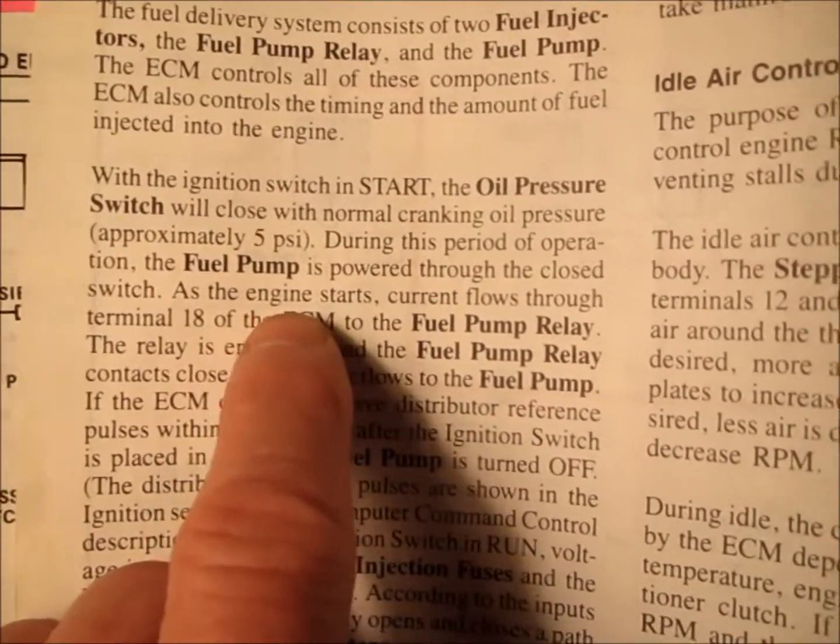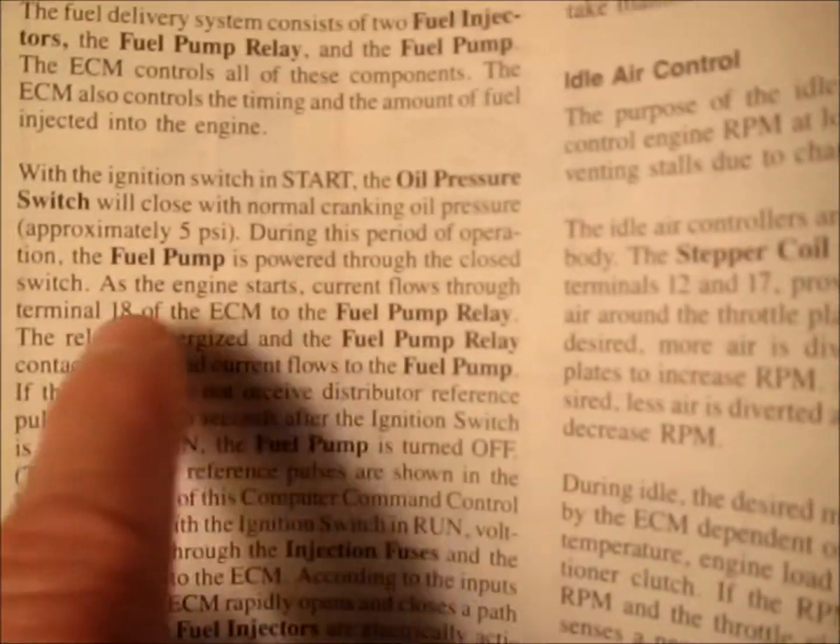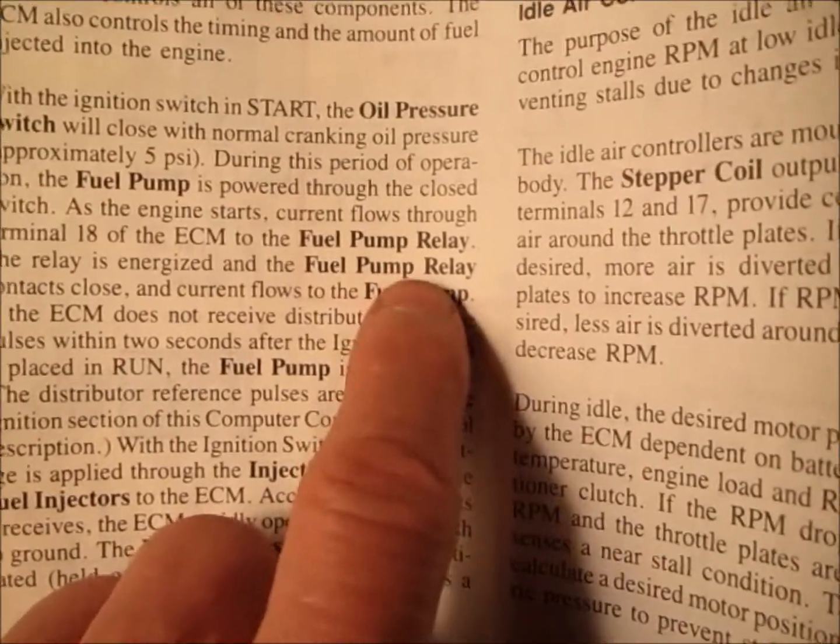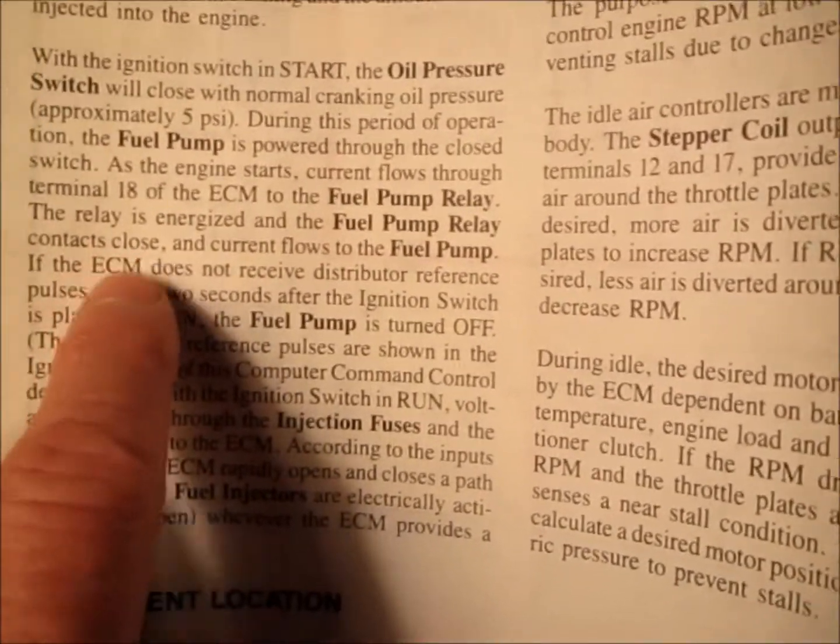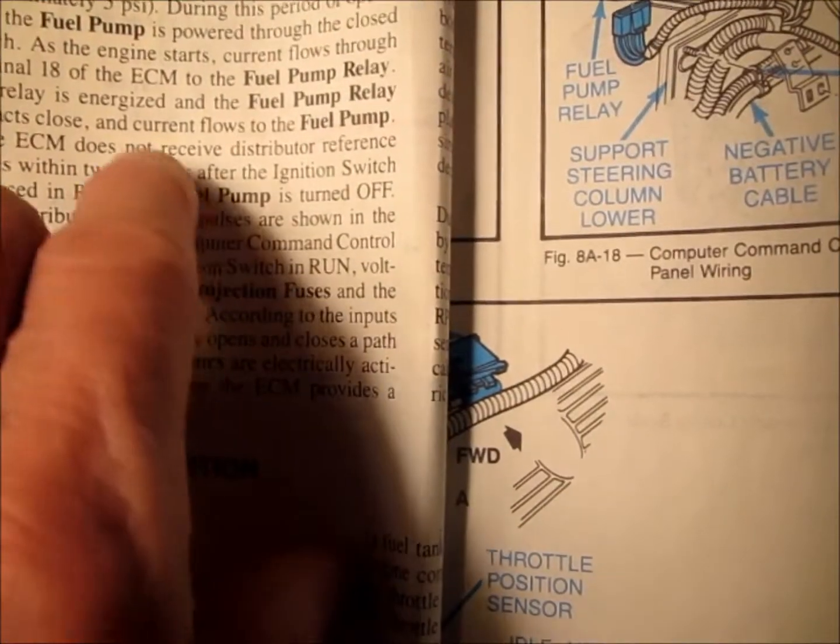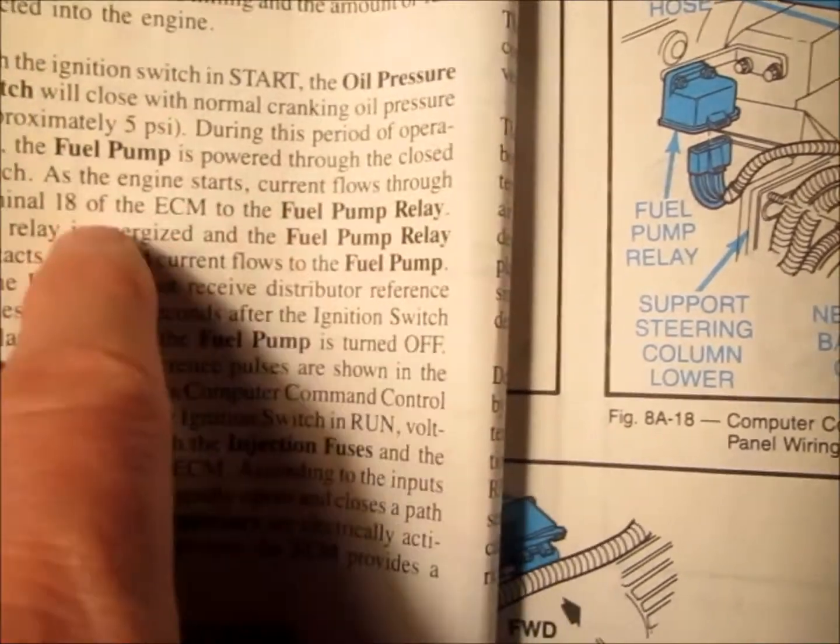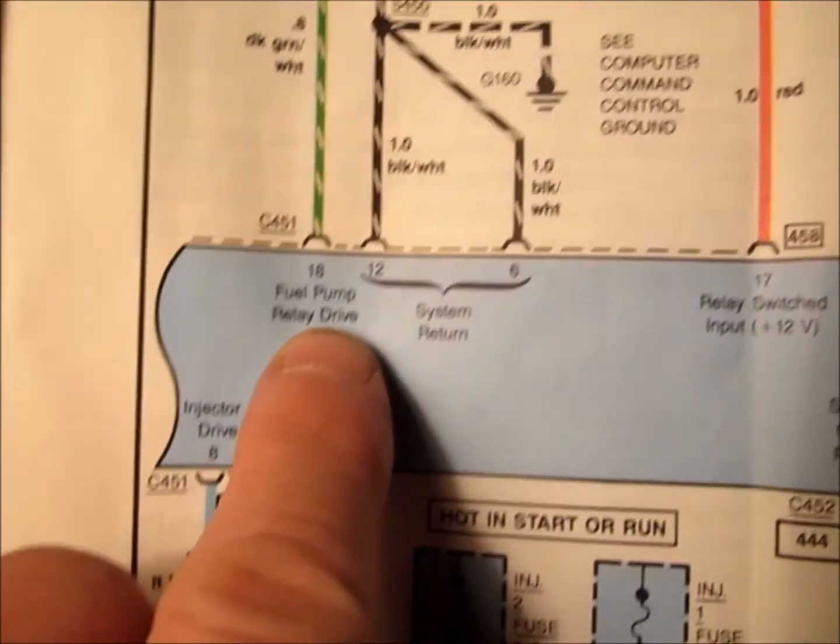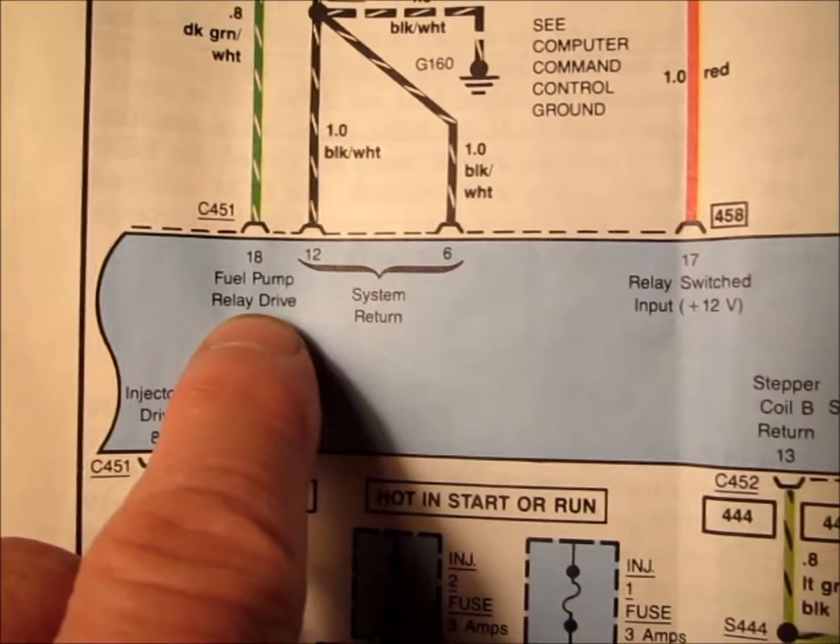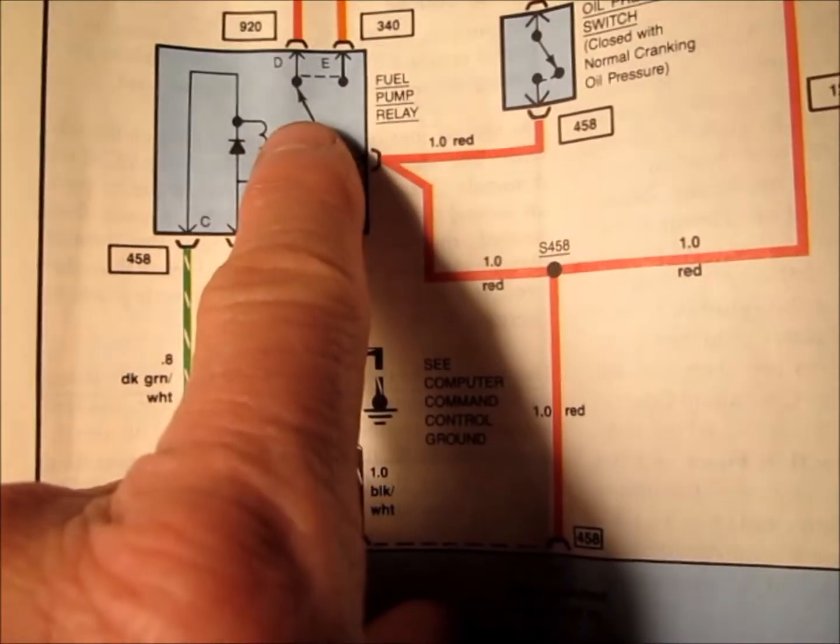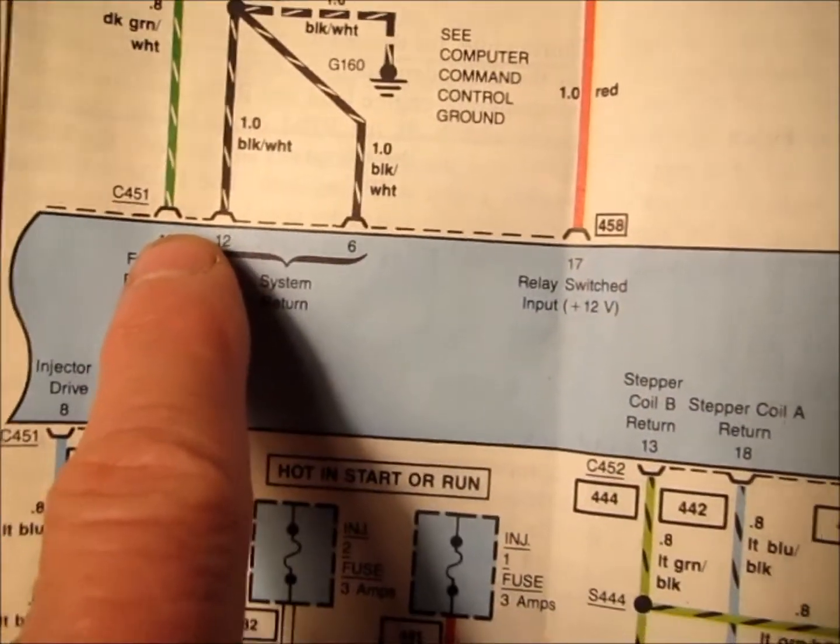As the engine starts, current flows through terminal 18 of the ECM to the fuel pump relay. Terminal 18 off the ECM fuel pump relay drive, that is a dark green and white wire that goes to the fuel pump relay straight over to the ECM.